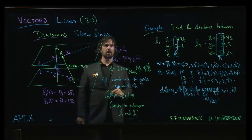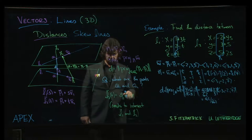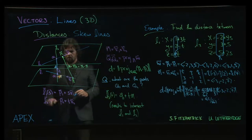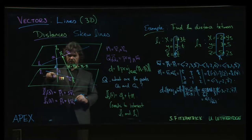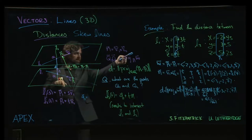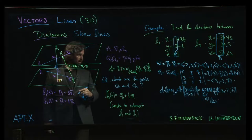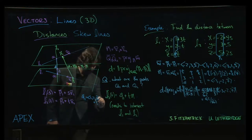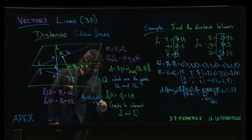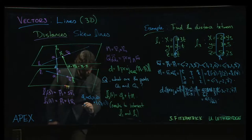So that point q1, whatever it is, q1 has to be, well because it's on the first line, it's given by the equation of the first line. It has to be 1, 2, 0 plus t times 3, minus 1, 1 for some t.